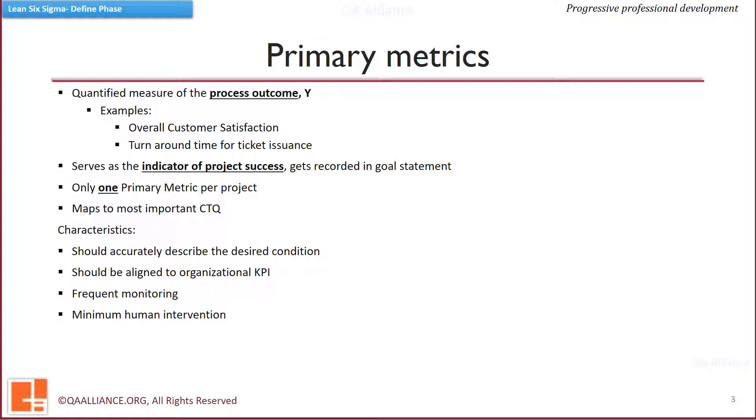The basic characteristic is that it should accurately describe the desired condition of the process. The primary metric must accurately describe the actual state of the process and should also address the outcome. It should be aligned with key performance indicators of the organization.